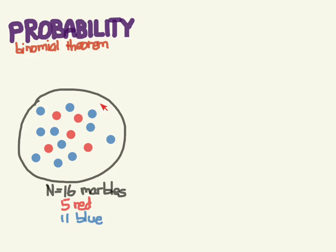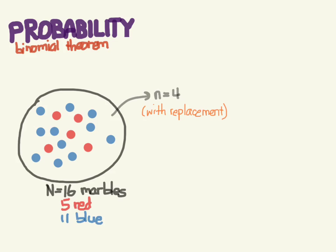So let's say we have our 16 marbles again — five of which are red and 11 of which are blue — and we want to take out four marbles. We'll take a marble out and then put it back in, because we're doing it with replacement. We're only talking about independent events, meaning the probability of one event does not depend on the probability of another event.